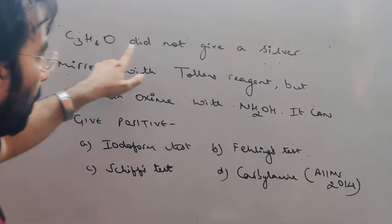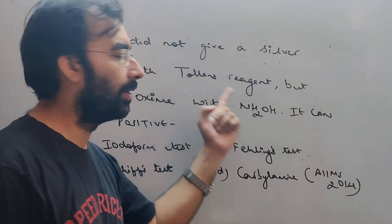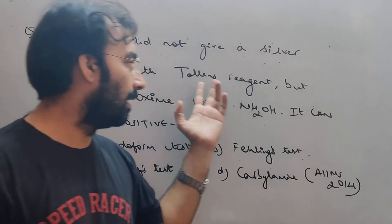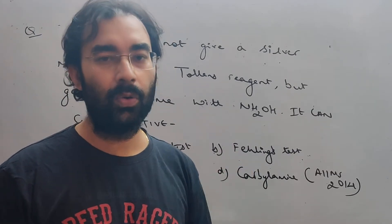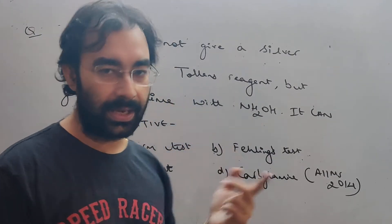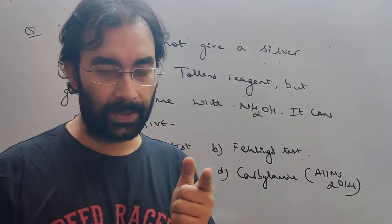C3H6O compound did not give us silver mirror with Tollen's reagent. Look, we did not test with Tollen's mirror and with Tollen's reagent. If we focus on this, we test with Tollen's reagent with aldehydes, right?